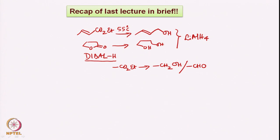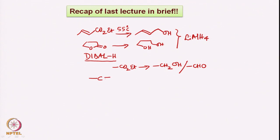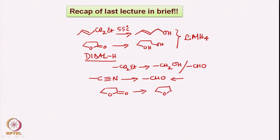We also looked at the reactivity of diisobutylaluminum hydride with respect to the nitrile, where it can be stopped at the aldehyde stage — which is very different from lithium aluminum hydride. On the other hand, lithium tri-alkoxy aluminum hydride, which has only one hydrogen, can also do the same transformation leading to aldehyde from nitrile. We also looked at how lactones can be selectively stopped at the lactol stage.